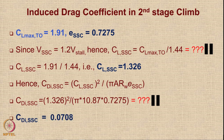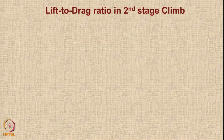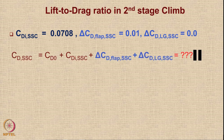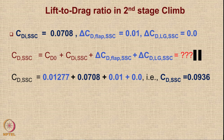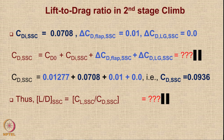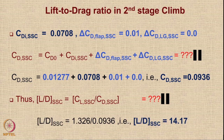CD_SSC = CDO + CDI_SSC + CD_flap_SSC + CD_LG_SSC. With CDO = 0.01277, CDI_SSC = 0.0708, flap drag = 0.01, and no landing gear drag, the total CD_SSC = 0.0936. Therefore L/D_SSC = CL_SSC / CD_SSC. Pause and calculate — the L/D_SSC turns out to be 14.17.